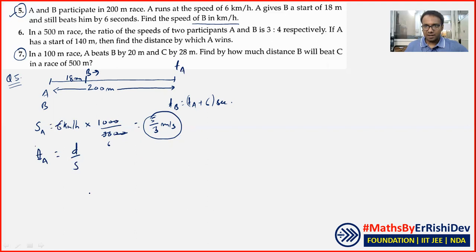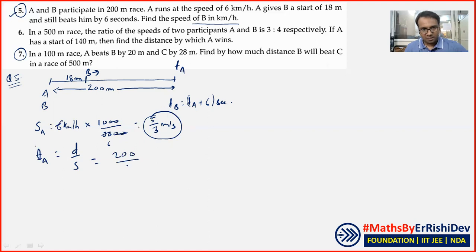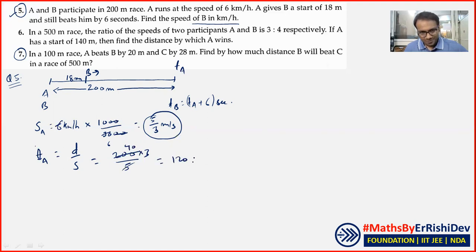Next information پر focus کرتے ہیں۔ Time نکالنے میں اب کوئی problem نہیں۔ Distance 200 metres ہے، speed 5/3 ہے — 200 upon (5/3) = 120 seconds۔ تو A کو 120 seconds لگ رہے ہیں۔